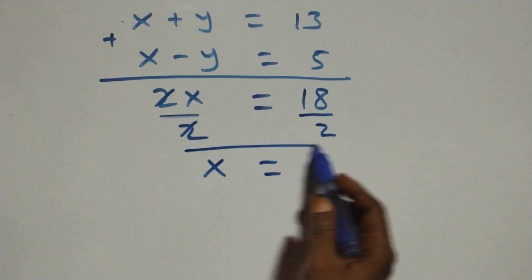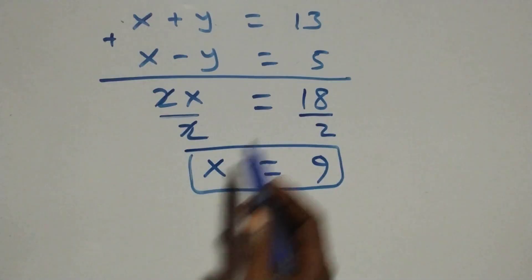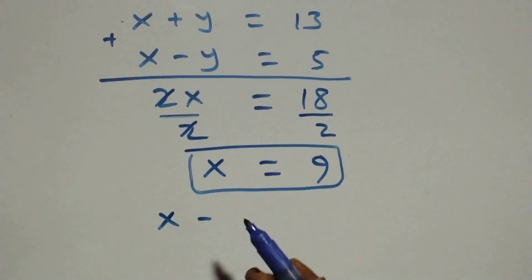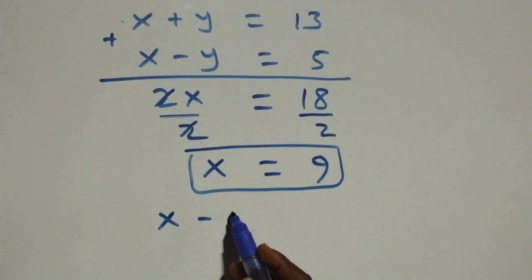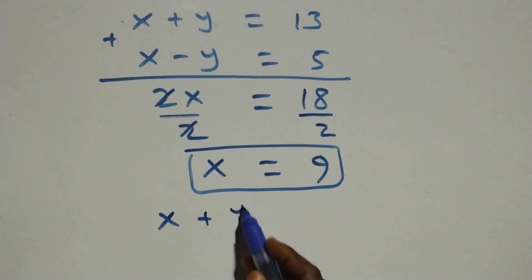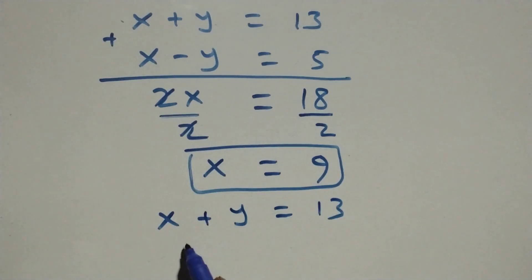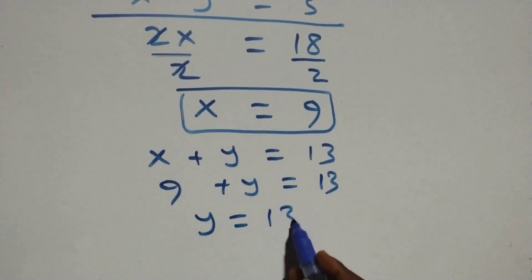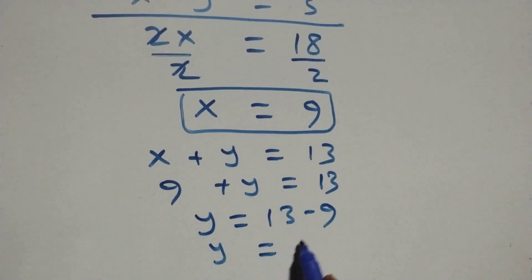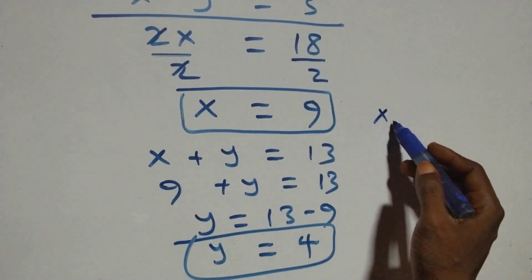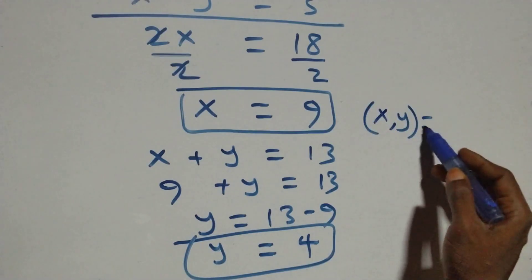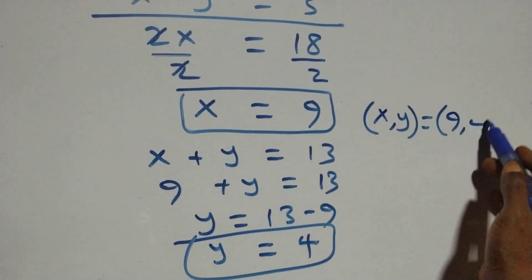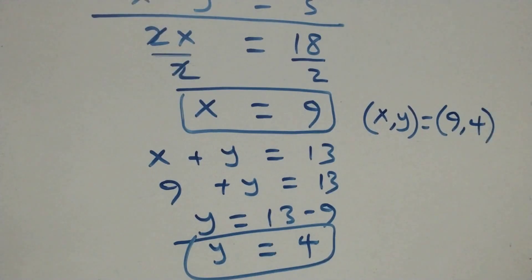For Case 2 we have x equals 9. To find y, we use equation 1: x plus y equals 13. Substituting x equals 9 gives 9 plus y equals 13, so y equals 13 minus 9, which is 4. The second solution is x comma y equals (9, 4).